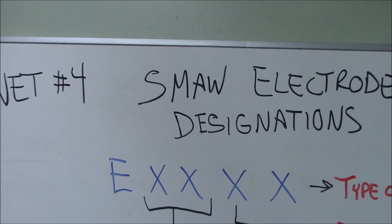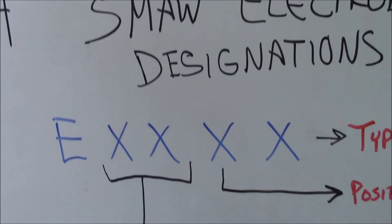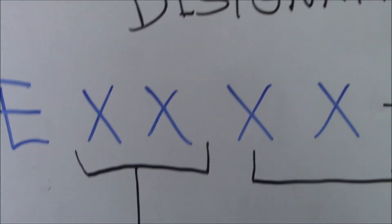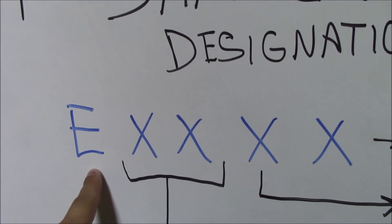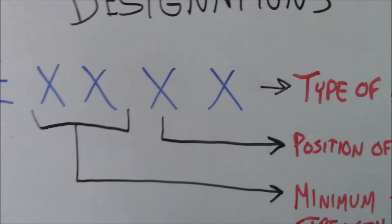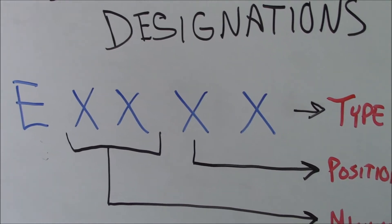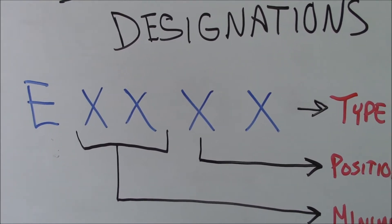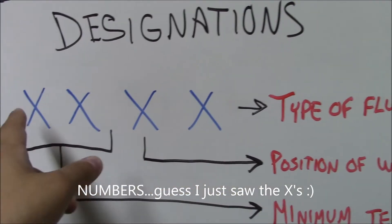Shielded metal arc welding, commonly called stick welding or arc welding or all sorts of different names. We start off with our E. E just simply means that it's an electrode. When you're dealing with your low carbon steel electrodes, which is what this is covering right now, it comes with four letters after the E.